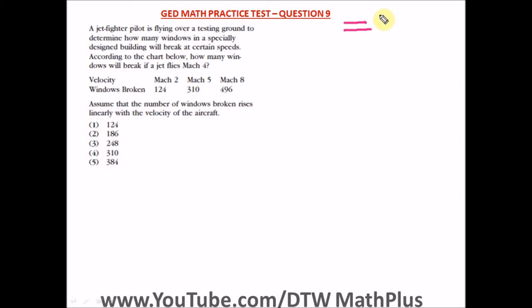It's like linear, the same. Velocity varies directly proportional to the number of windows broken. Linear means as velocity rises, number of windows broken also rises. From our chart, we can see that when he flies Mach 2, we have 124 windows broken. When he flies Mach 5, we have 310 windows broken. When he flies Mach 8, we have 496 windows broken.